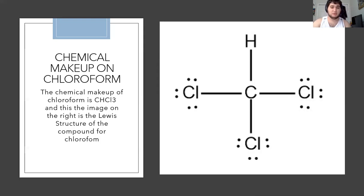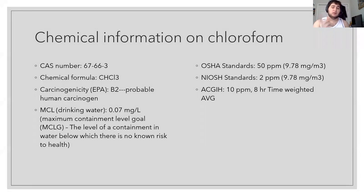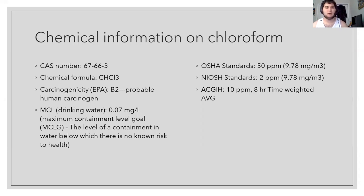As you can see again in the image, we have the Lewis structure showing how the compound would look on paper. This is the basic information we have for chloroform: its CAS number is 67-66-3, and the chemical formula is CHCl3.